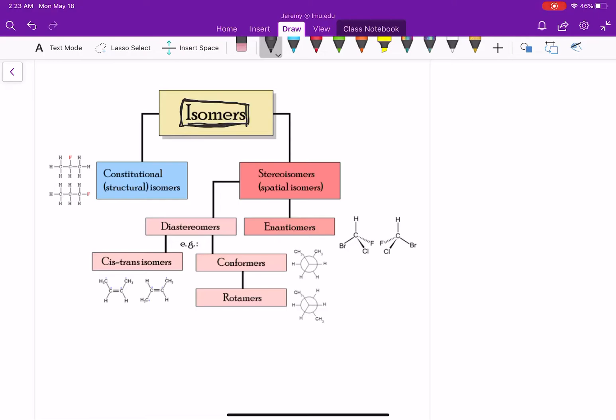Usually when we're talking about isomers, we're comparing two compounds. They have something similar about them and then something different. We can first break isomers down into two categories: constitutional or structural isomers, or stereoisomers.